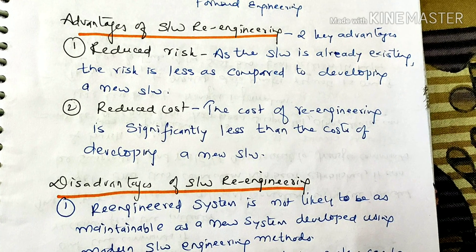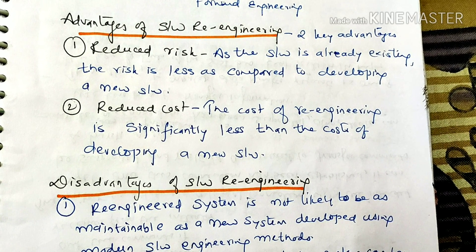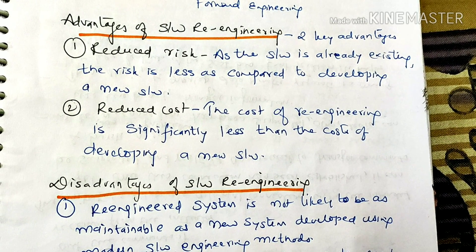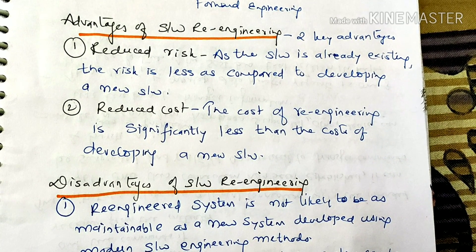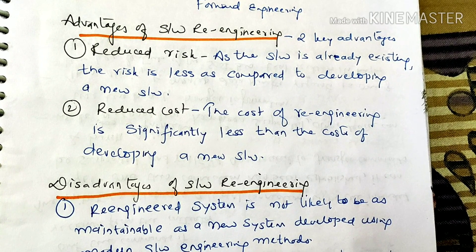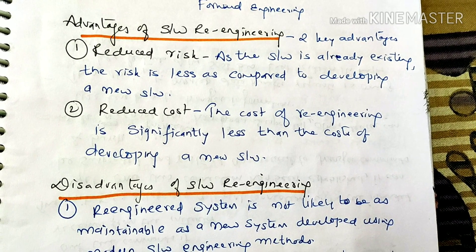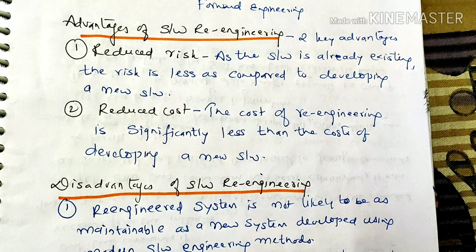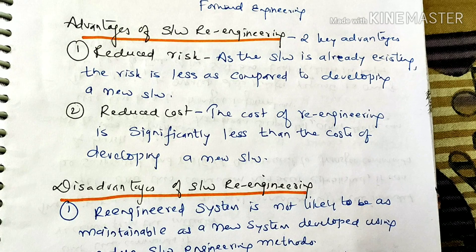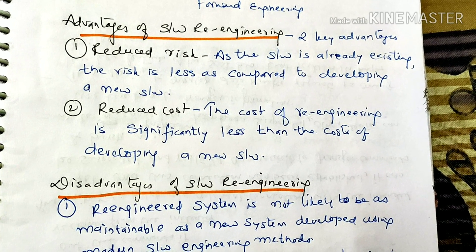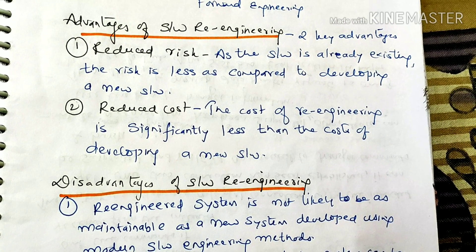The second advantage is Reduced Cost. The cost of re-engineering is significantly less than the cost of developing new software. So if you re-engineer a software, the cost is less than the cost of developing a new software.